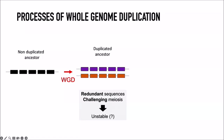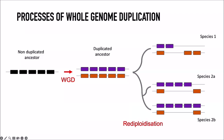This duplication presents a significant challenge to meiosis: instead of diploid chromosomes pairing nicely, you have four copies, leading to tetravalent pairing and complications in producing gametes. For a long time it was thought these duplicated species were unstable and had to return to a diploid state quickly. This process is called rediploidization.